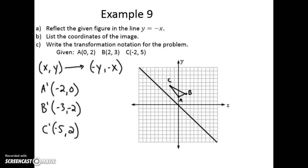Now we can plot these points. Negative 2, 0 is a prime. B prime is at (-3, -2). C prime is at (-5, 2). The shape looks the same, just a different orientation — it's folded along the line y = -x.